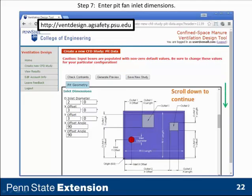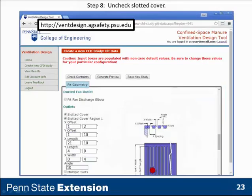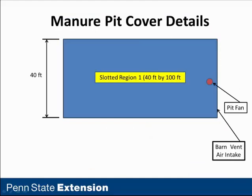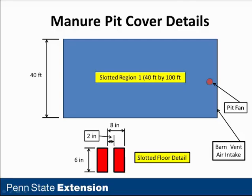Scrolling down to continue, we have a chance to define our manure pit cover. We check this box because we do have a slotted cover. We only have one region because it's a totally slotted floor, but we still have to define our slotted floor characteristics. Looking at the footprint of the manure storage, our slotted cover region number one is 40 by 100 feet, with our pit fan located at the right-hand end near the barn vent air intake area.